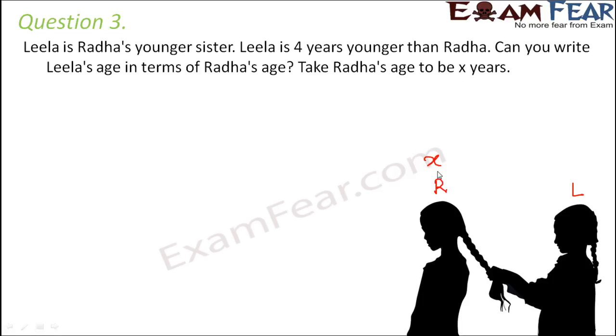So Radha is X years old and Leela is younger than Radha. So that means Leela's age will be lesser than Radha's age. So what would be Leela's age? Leela's age would be 4 less than Radha's age. So that is it would be X minus 4. Therefore Leela's age would be X minus 4 years.